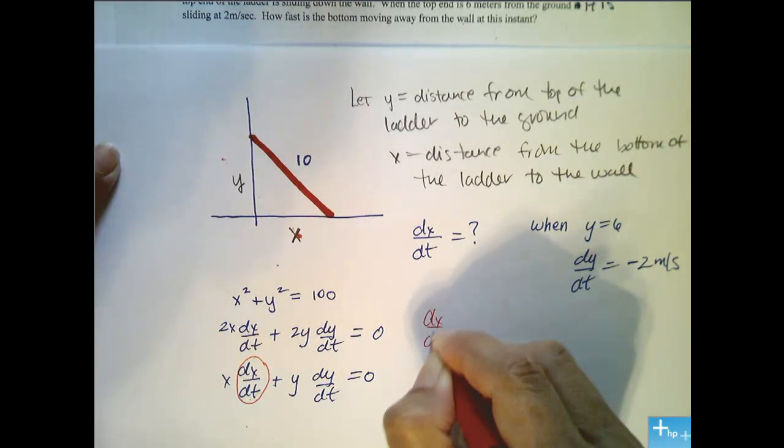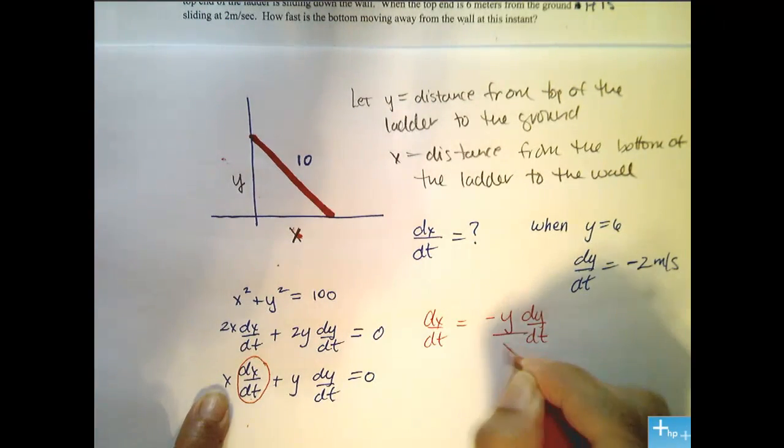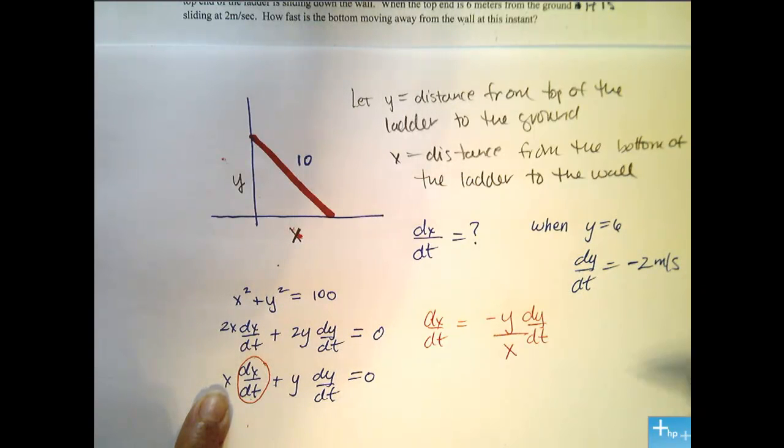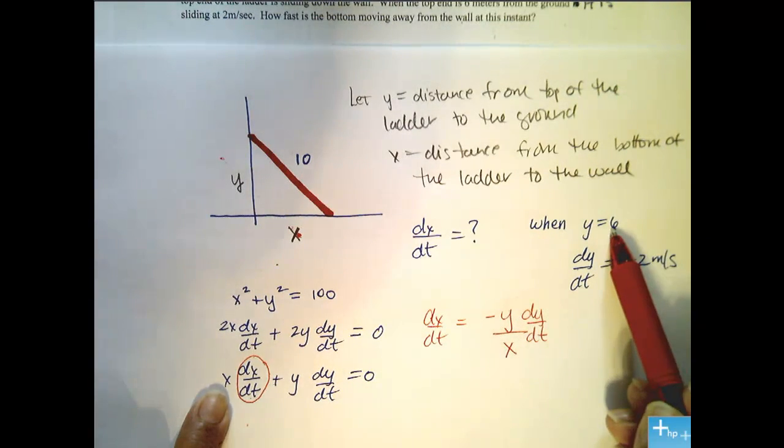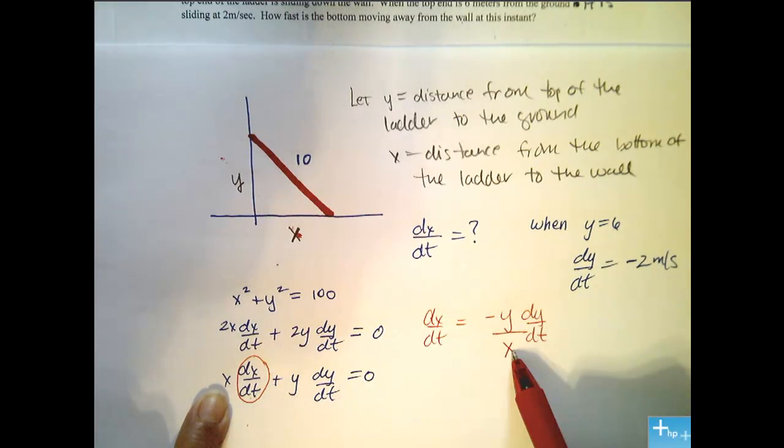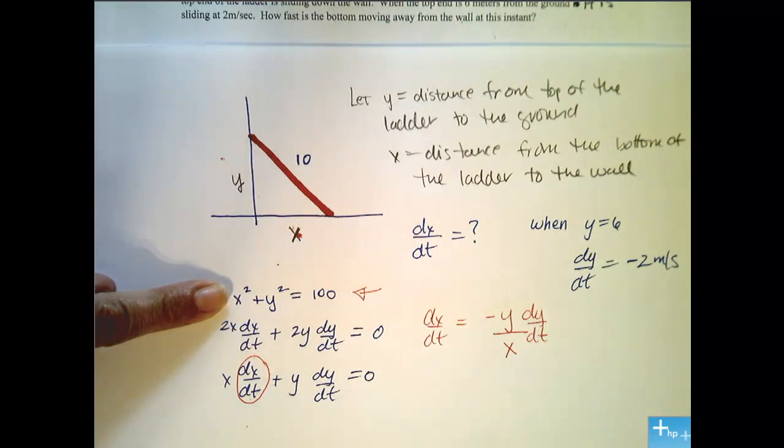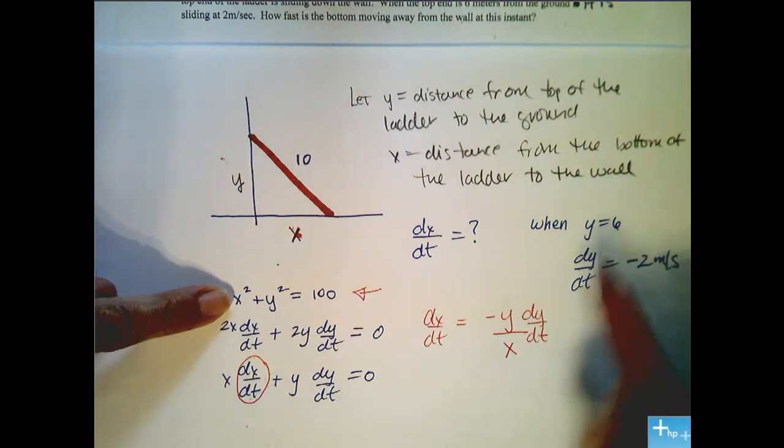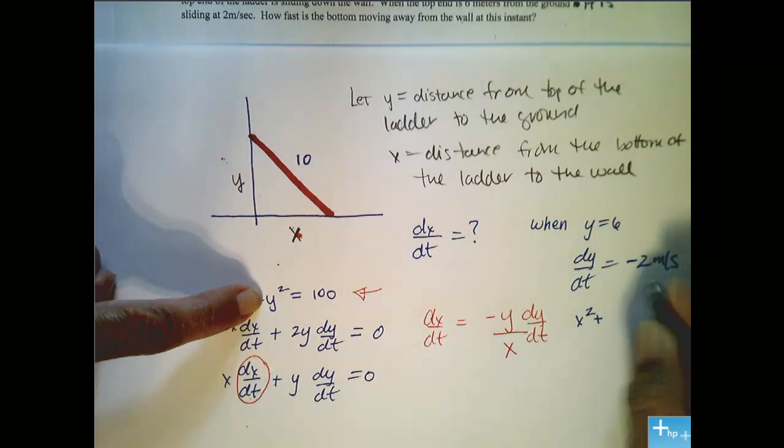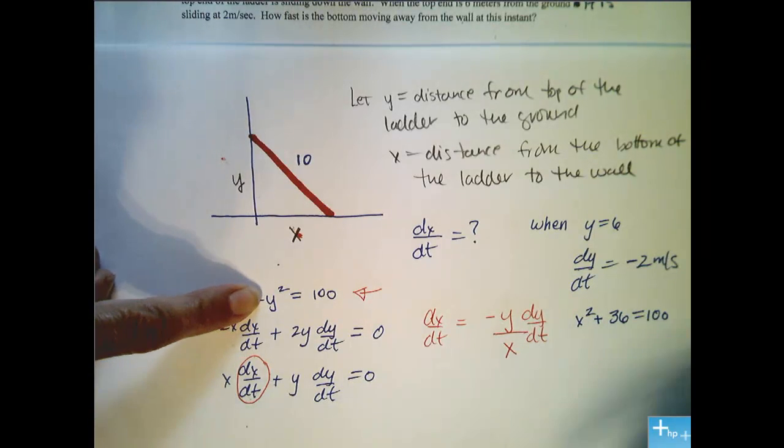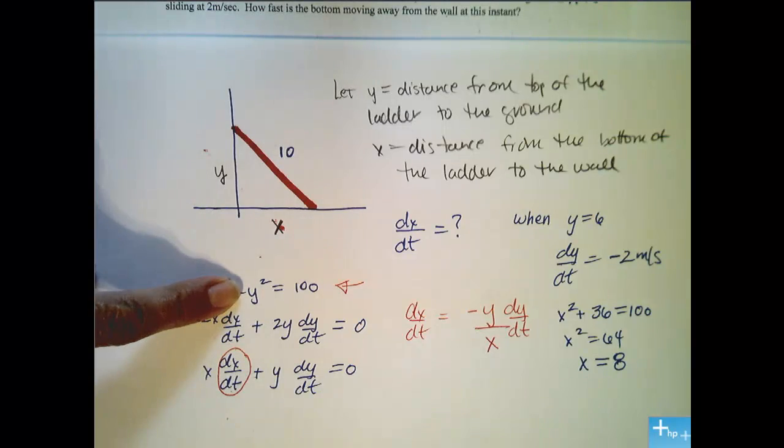So dx/dt is equal to minus y, I'm going to move that over, dy/dt divided by x. Alright? Now I want to plug in all values for the variables over on the right side. Now notice I'm given y is 6, I'm given dy/dt is negative 2, but I'm not given x. But fear not, we have a relationship right here between x and y. So if I know y, I should be able to find x. So I'm going to plug in 6 for y squared, and I get x squared plus 6 squared, which is 36, equals 100. Or, x squared equals 64, x equals 8. Alright, I'm ready to plug things in now.